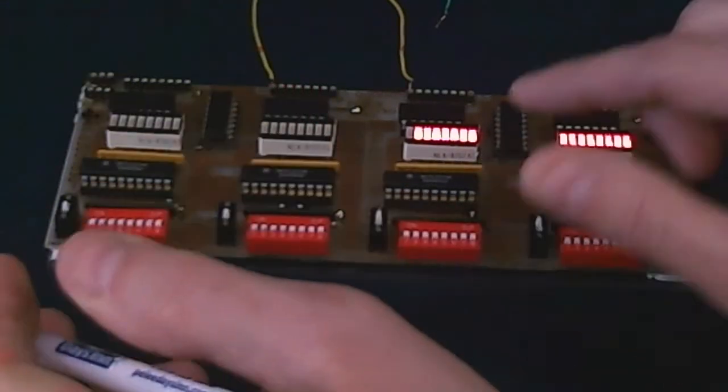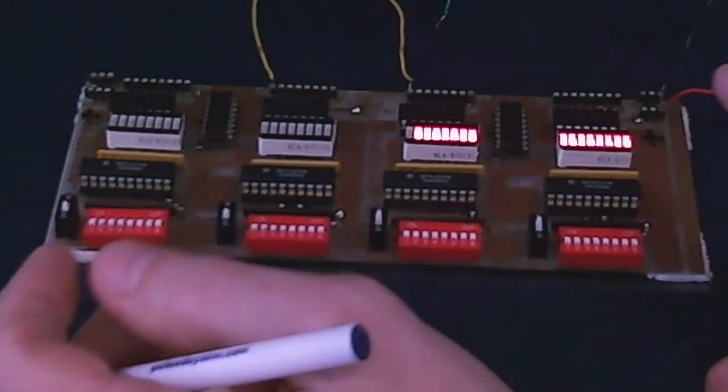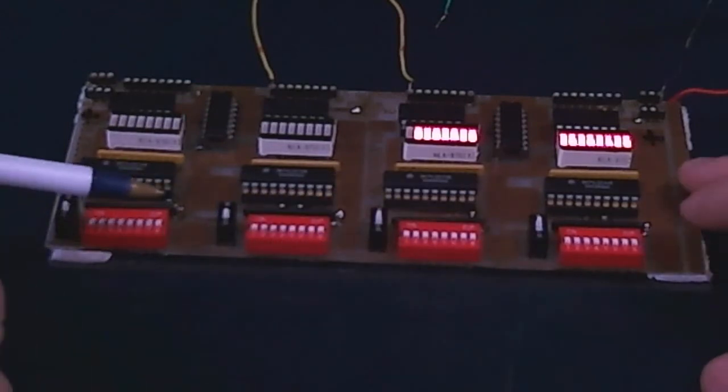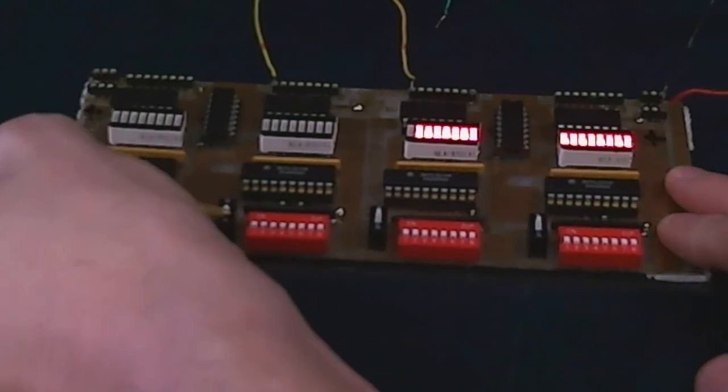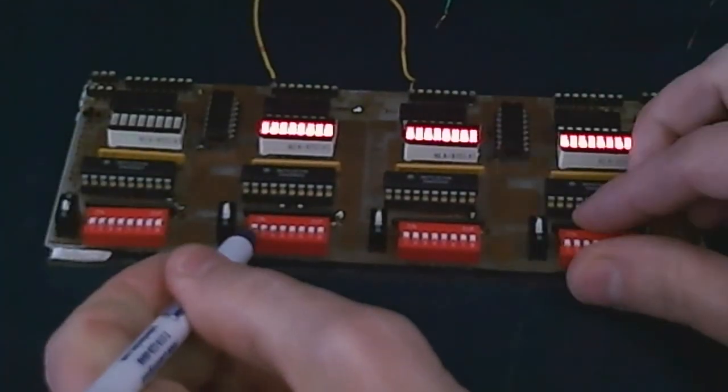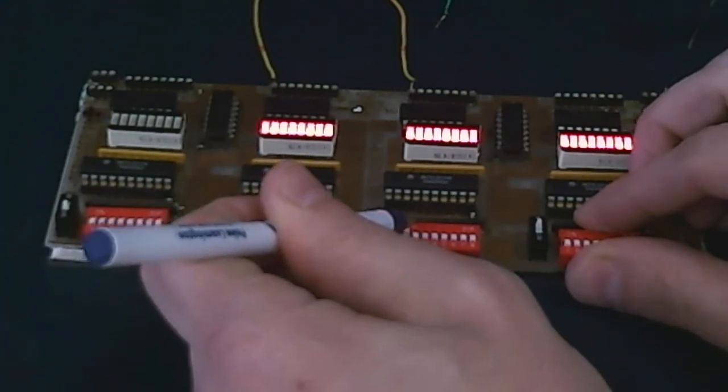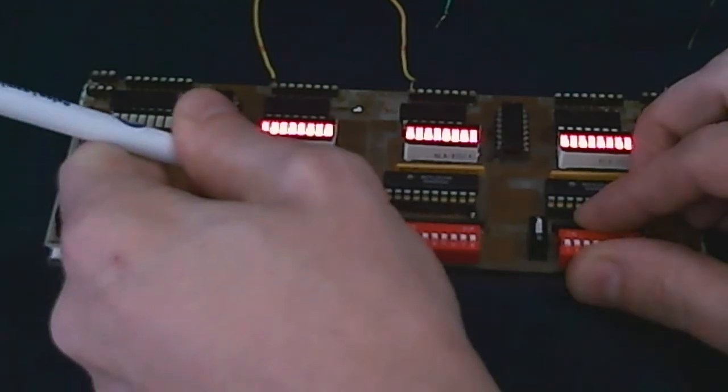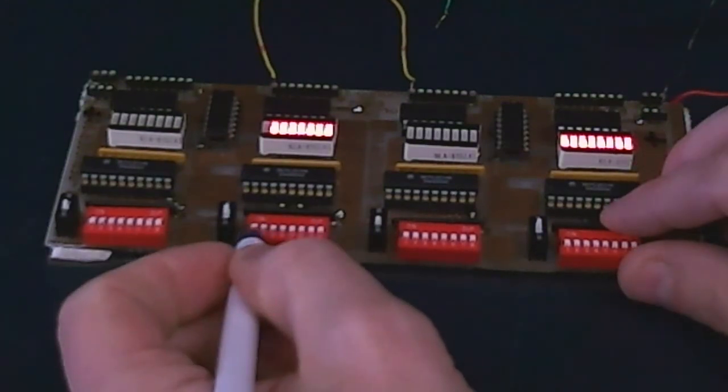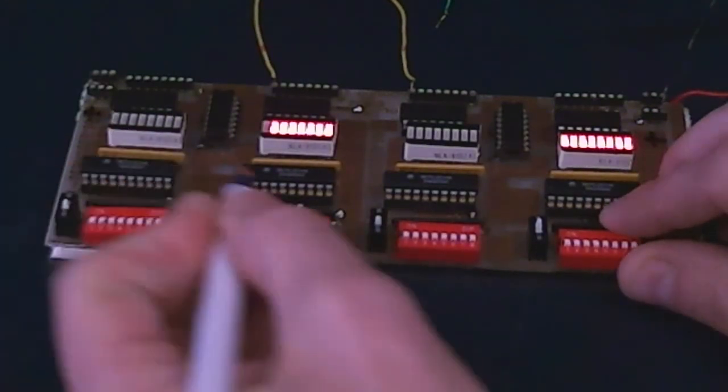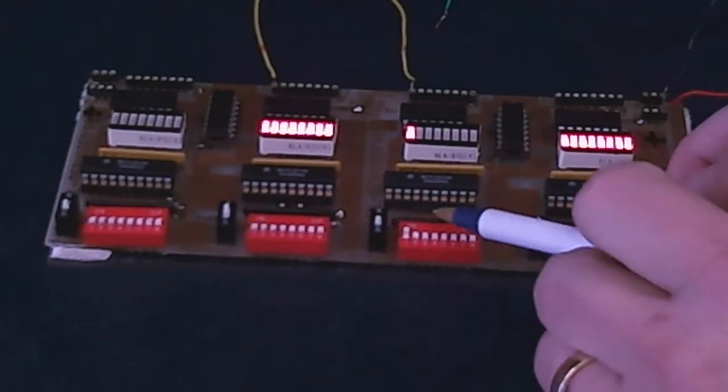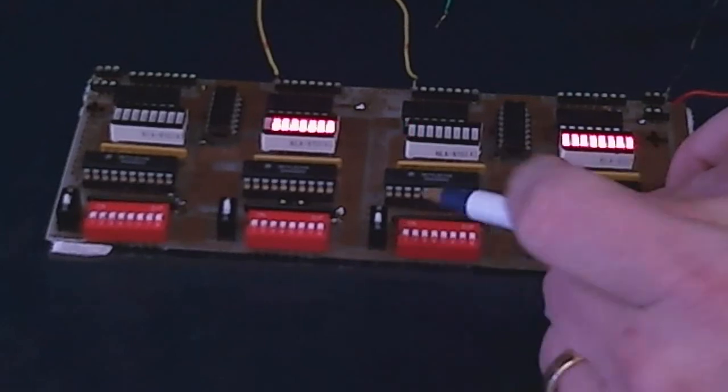All right, now if we want, we can switch the modes of these around. So if we switch this to display mode, now we notice that this one doesn't affect it, nor does this one. But now if we switch this one to control mode, now we notice this one doesn't change it, but this one does. So now as we change this one back and forth, then that changes this, and now this is the signal that is being fed over here.